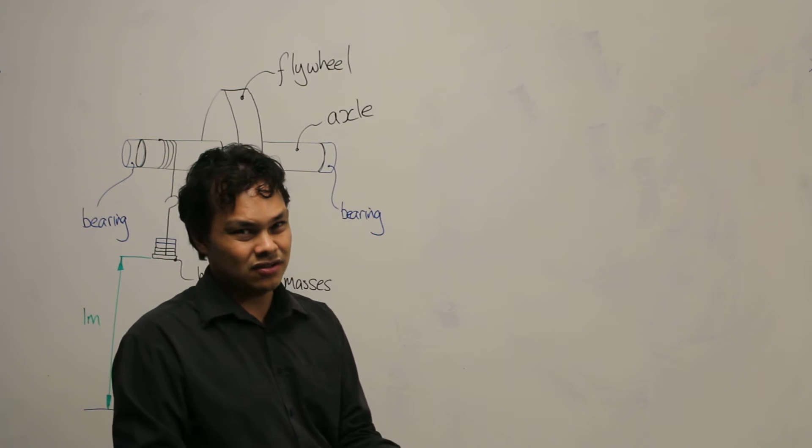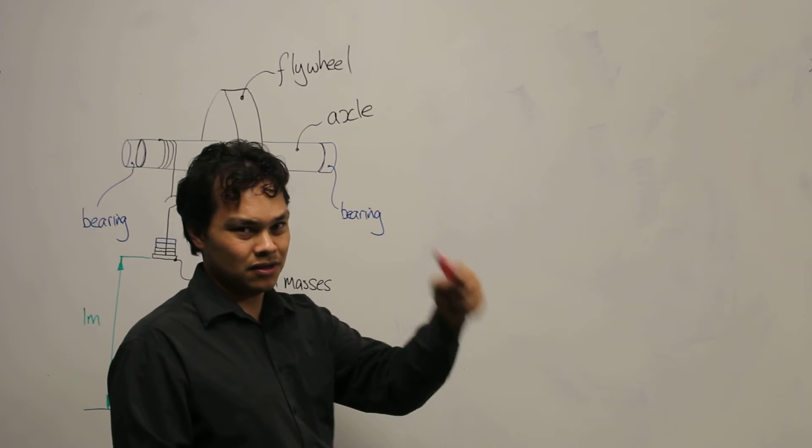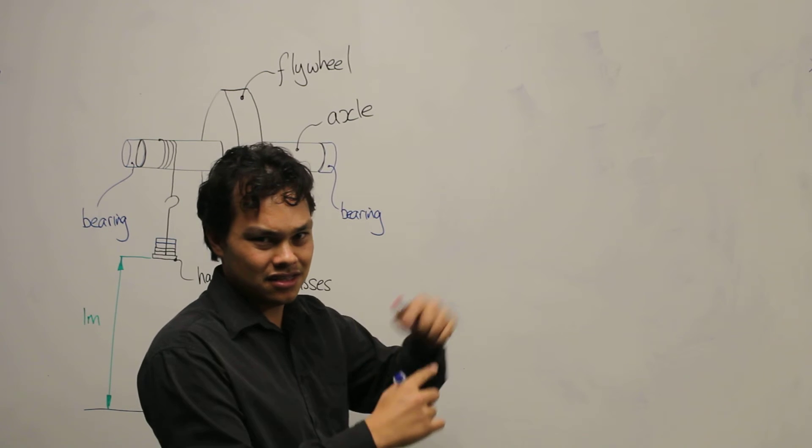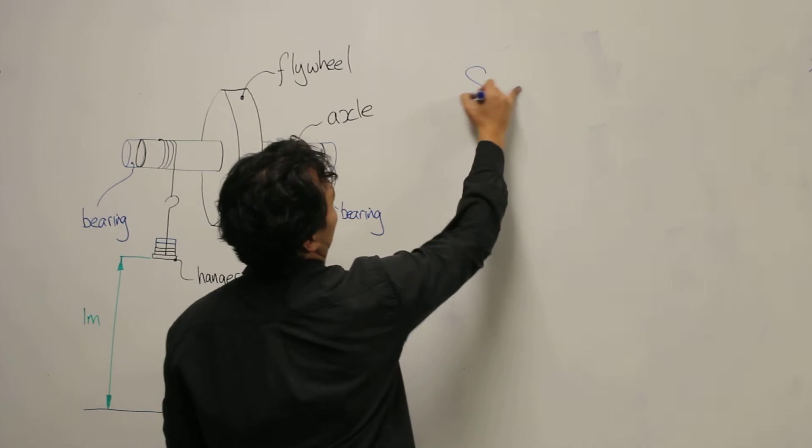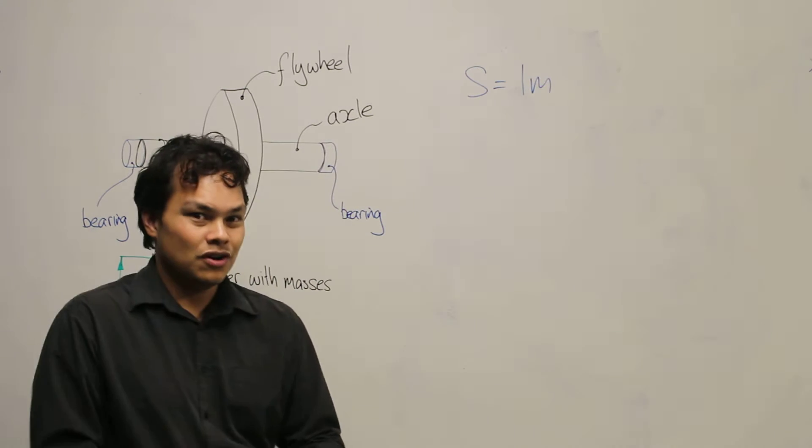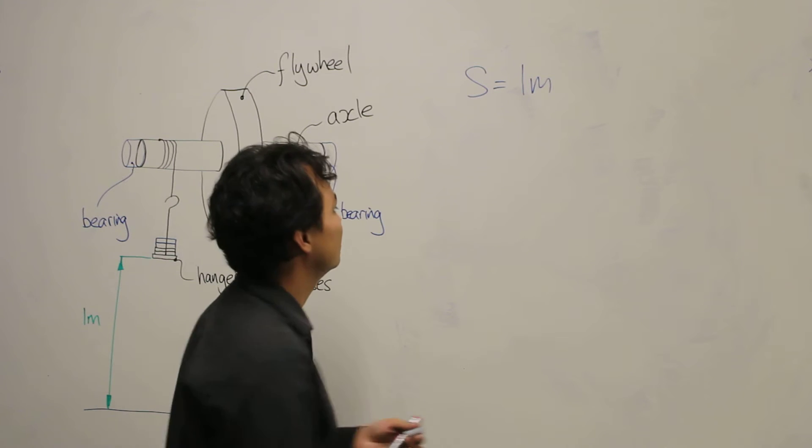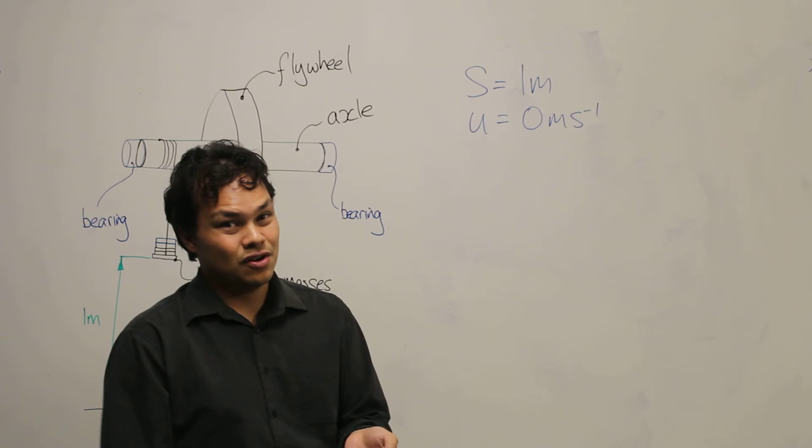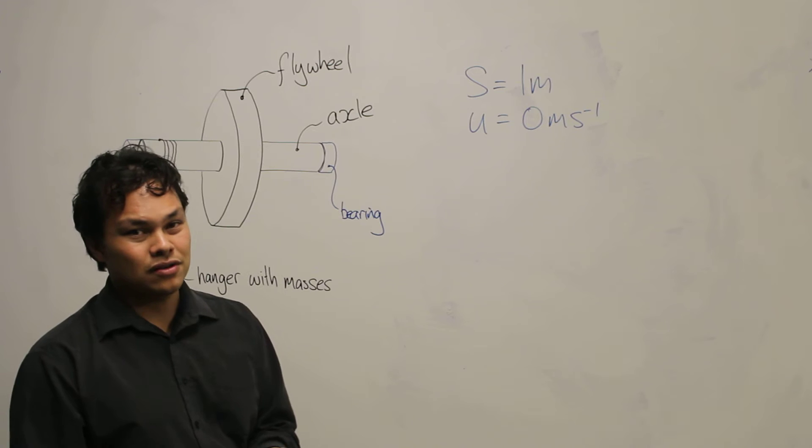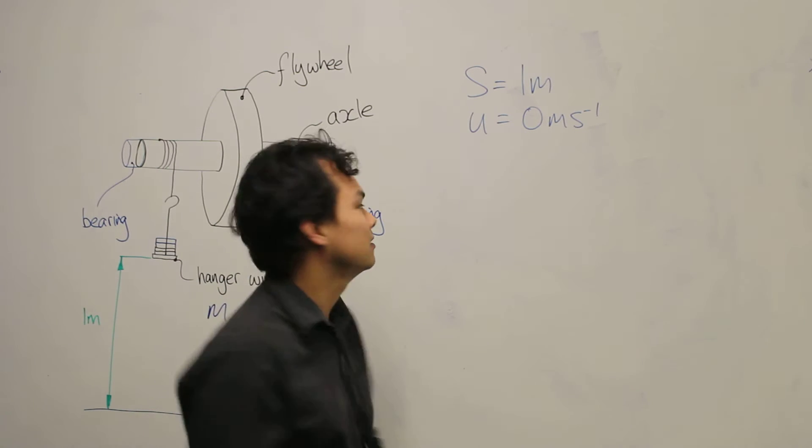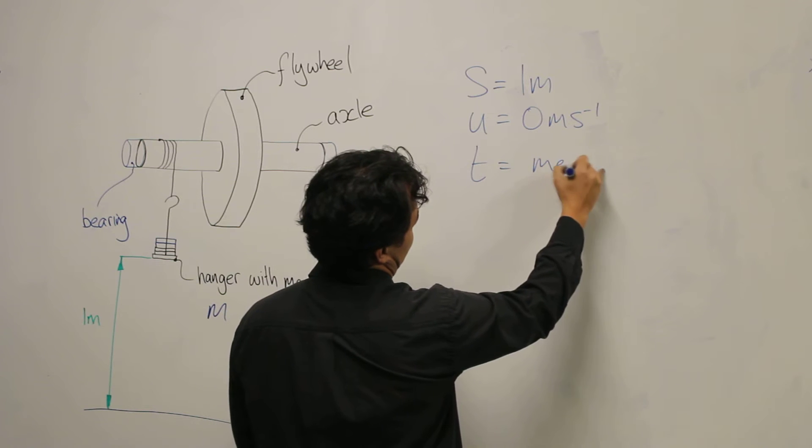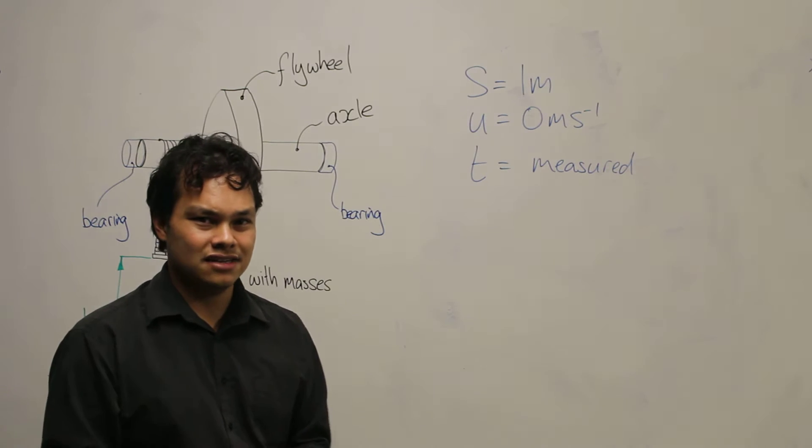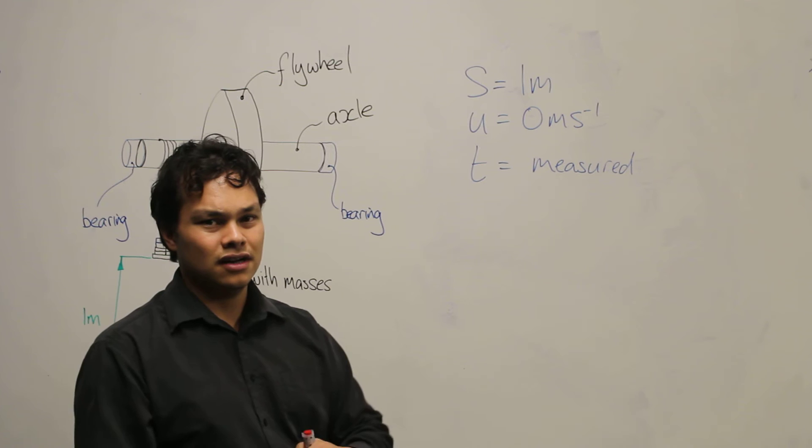We know firstly that it's a constant acceleration situation because there's only one single force acting on our system. Second, we know the distance that the component has traveled which is one meter. We know the initial velocity of our hanger, so this is zero meters per second. We also measure the amount of time taken.